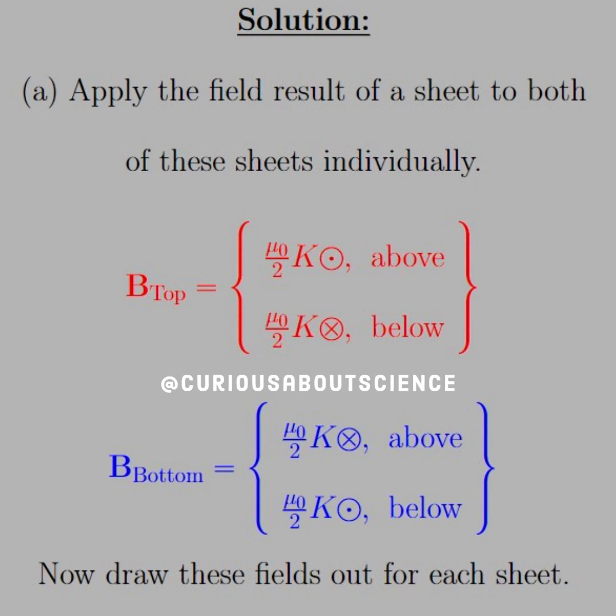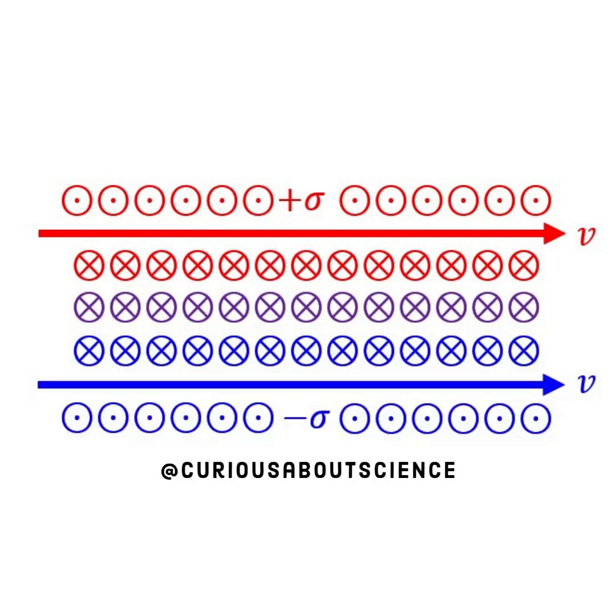Pretty simple, but we'll go ahead and draw it out so we can see something. So for the top plate, this is a side view, and we see that we have a plus sigma on top in the red and minus sigma on the bottom in the blue.